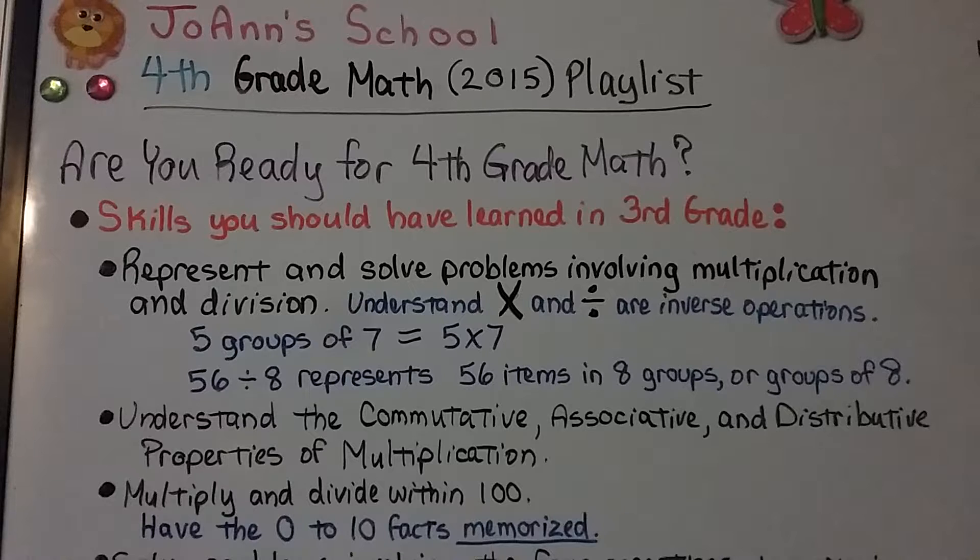You need to multiply and divide within 100. You have to have the zero to ten facts memorized, really memorized. You need to know that nine times six is equal to 54 just as quickly as you know that two plus two is four.